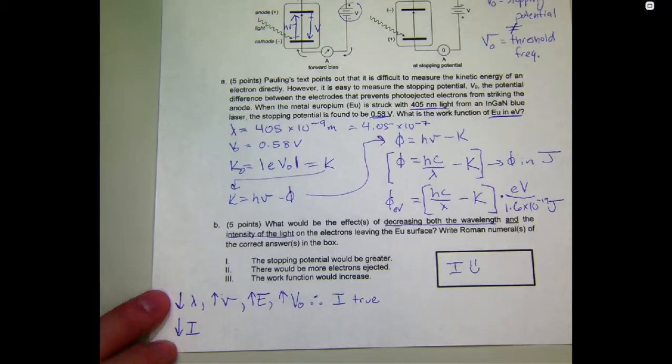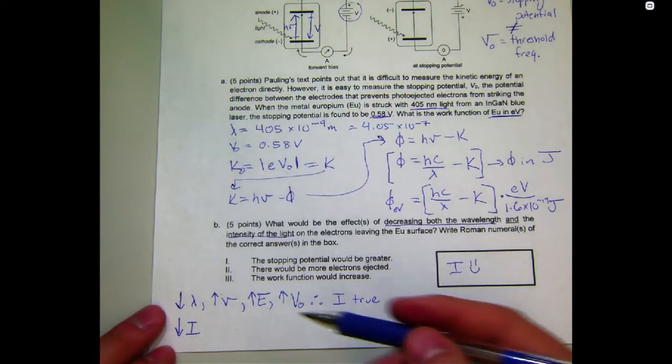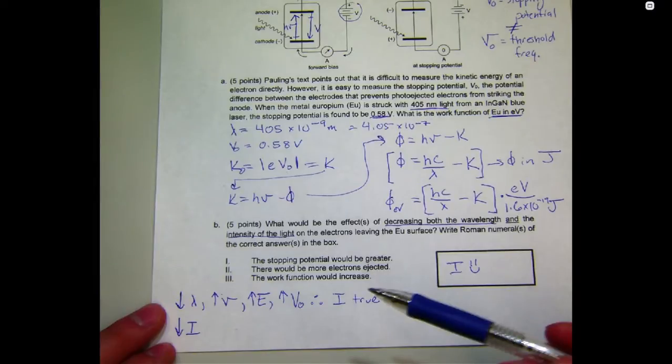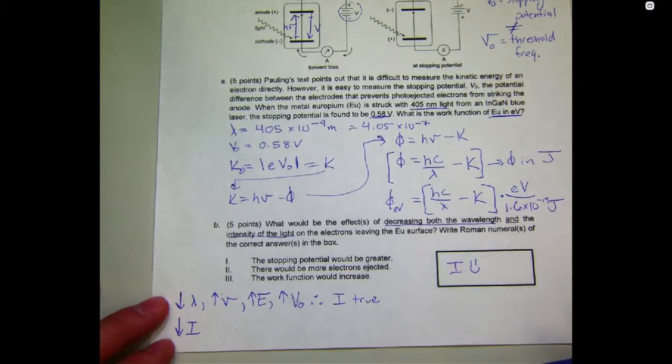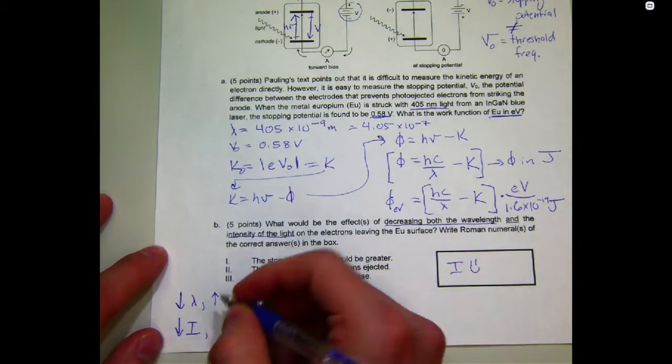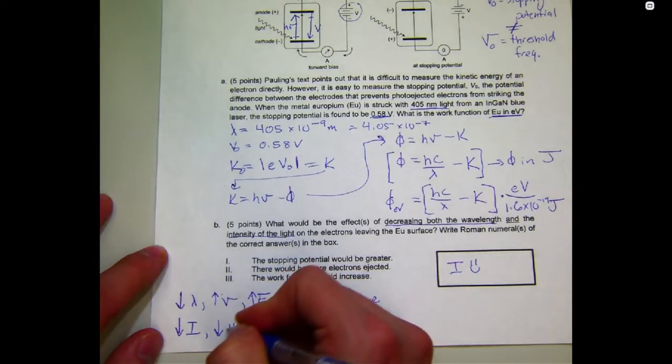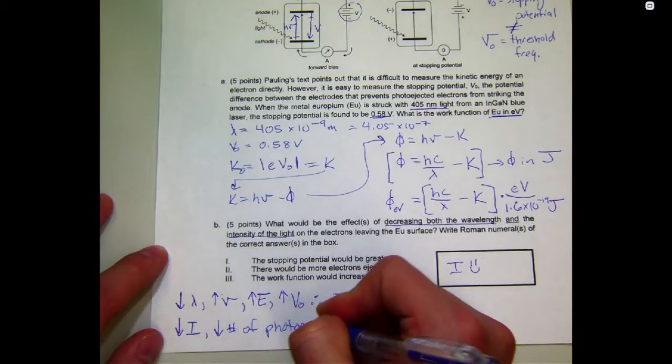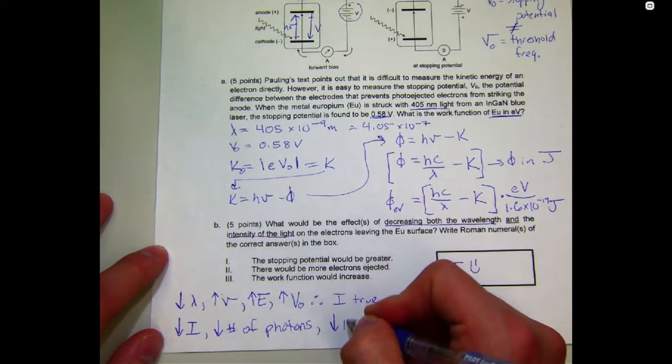And number two, I'm asking whether there would be more electrons ejected from the europium cathode. The answer to number two is false because the key conclusion from one of the key conclusions from the photoelectric effect experiment was that the number of photoelectrons that you get is linearly proportional to the intensity. The intensity, like behaving as photonic particles, so one photon in equals one photoelectron out. Intensity, if you decrease the intensity, you also decrease the number of photons, which means that you should decrease the number of photoelectrons.